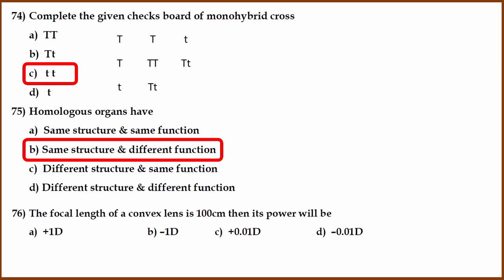What is the power of the convex lens whose focal length is 100 centimeter? 100 centimeter is one meter, so the reciprocal of one meter is the power which is one diopter.